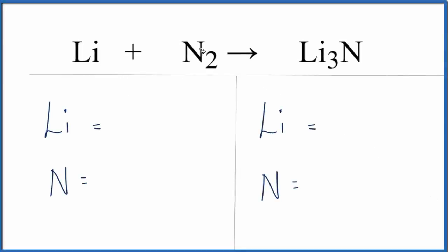To balance this equation, Li plus N2 yields Li3N, that's lithium nitride.